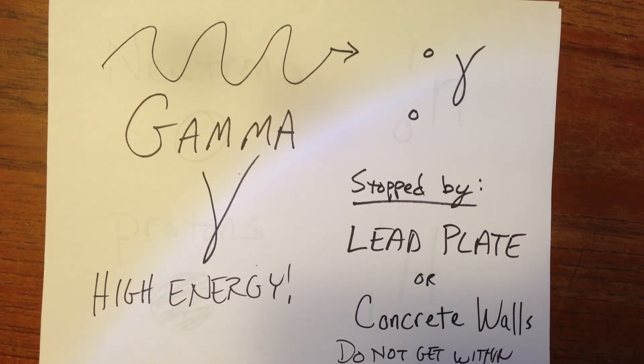The third kind, not actually a particle, it's a wave, is a gamma ray. These are also produced as a byproduct of certain kinds of chemical reactions, not chemical reactions, but nuclear reactions.